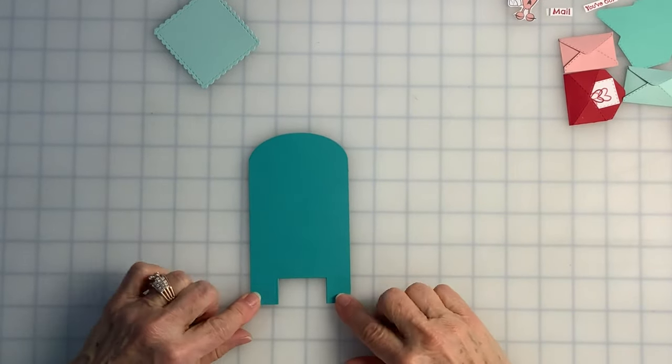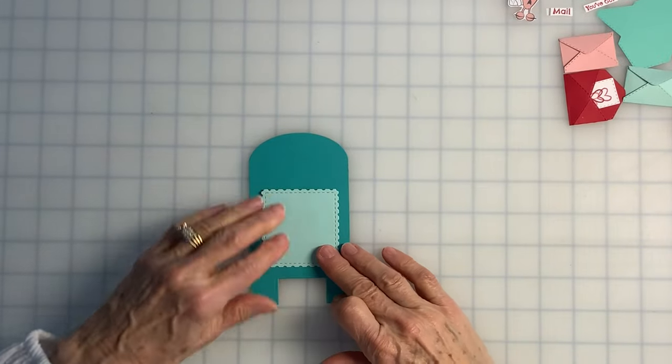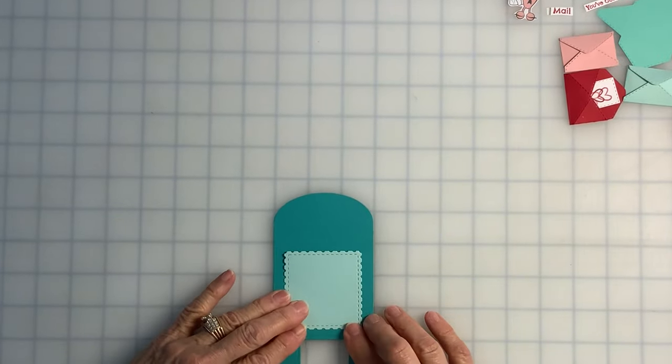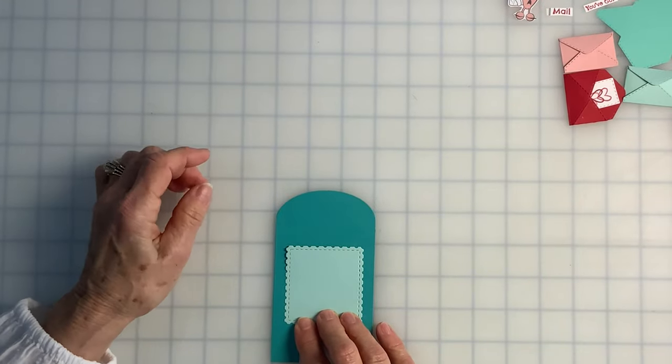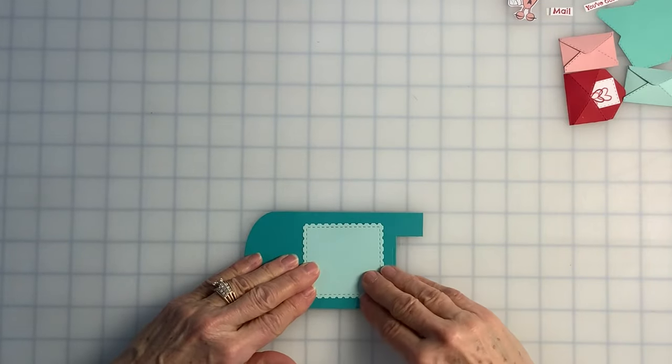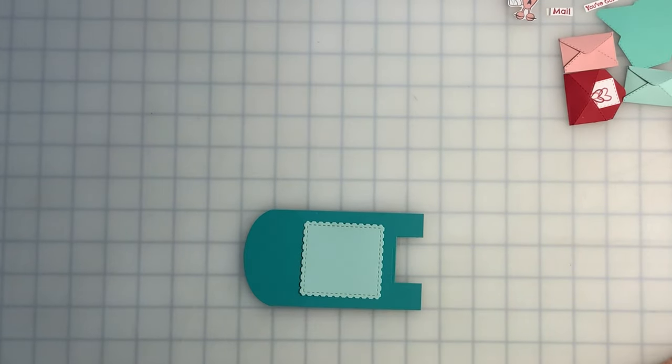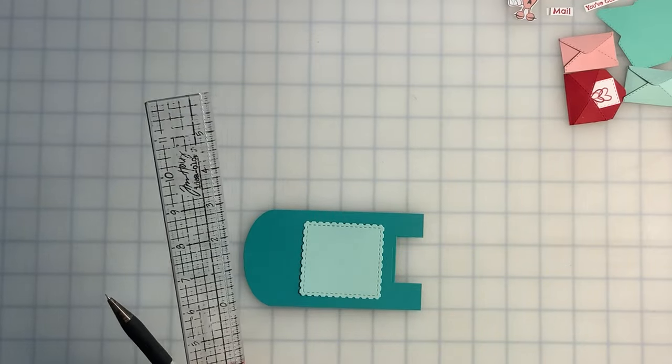Now here is my mailbox shape. The next thing I'm going to do is replace my decorative panel for positioning purposes, and what I need to do now is make the slit for all my little letters to lay in. So I'm going to lay the mailbox on its side, and I'm taking my clear ruler and my craft knife and pencil.